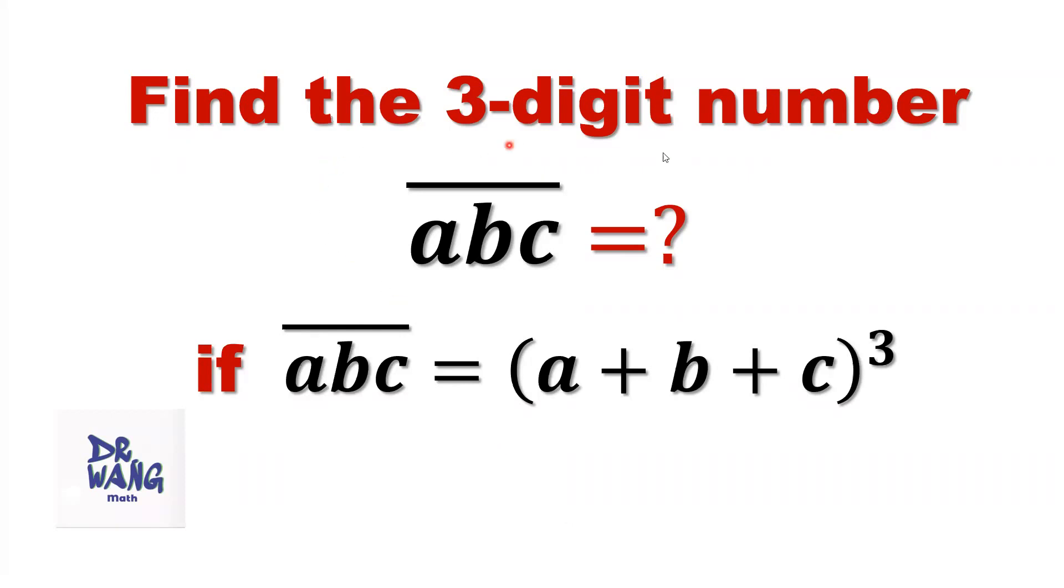Find the three-digit number ABC if this three-digit number equals the sum of all its digits to the power 3.